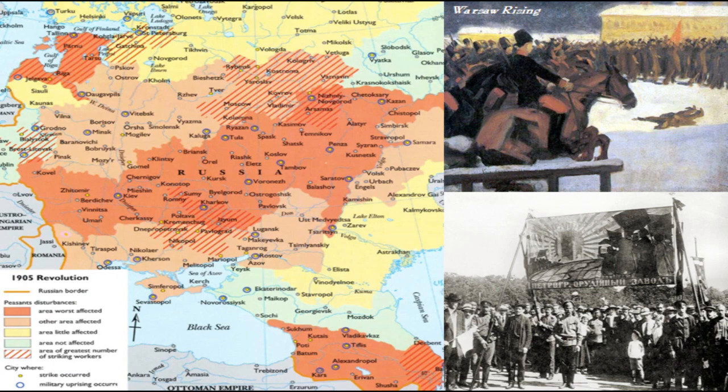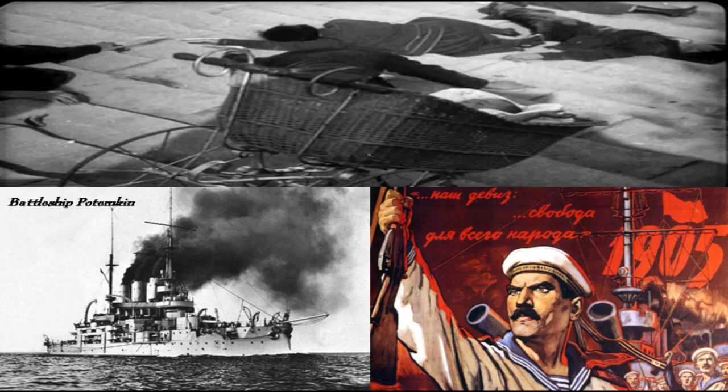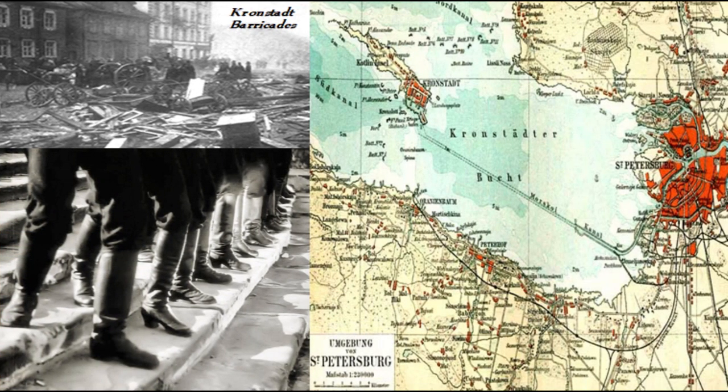Strikes and risings occurred all across Russia, especially in Finland, Poland, and the Caucasus. Then the crews of the Black Sea Fleet, notably on one of Russia's last surviving battleships, the battleship Potemkin, mutinied and shelled Odessa, leading to a general uprising. Simultaneously, the garrison at the Kronstadt Naval Base outside St. Petersburg also mutinied, and the Tsar's military support seemed gone.